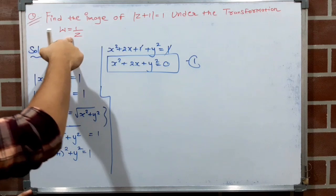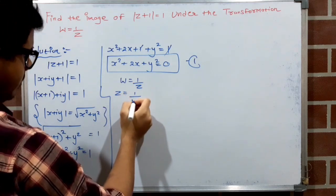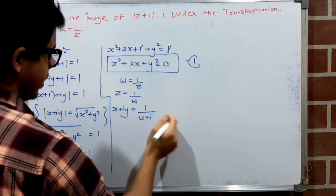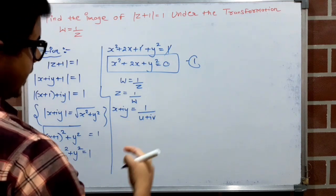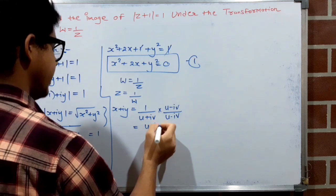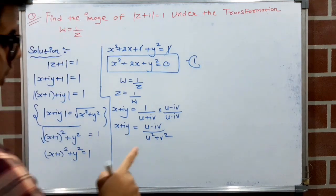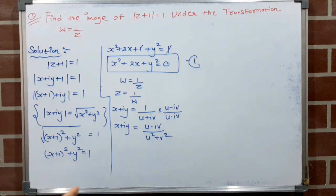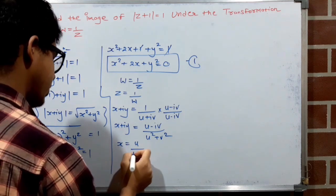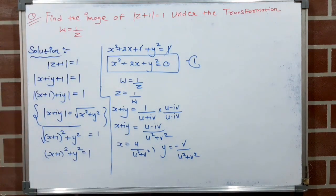Now we have the inversion transformation w=1/z, which means z=1/w. Since z=x+iy and w=u+iv, we get x+iy = 1/(u+iv). Multiplying numerator and denominator by the conjugate (u−iv): x+iy = (u−iv)/(u²+v²). Separating real and imaginary parts: x = u/(u²+v²) and y = −v/(u²+v²).